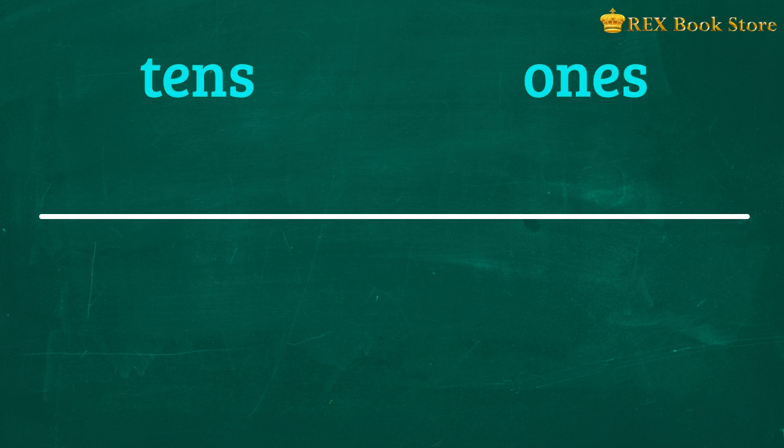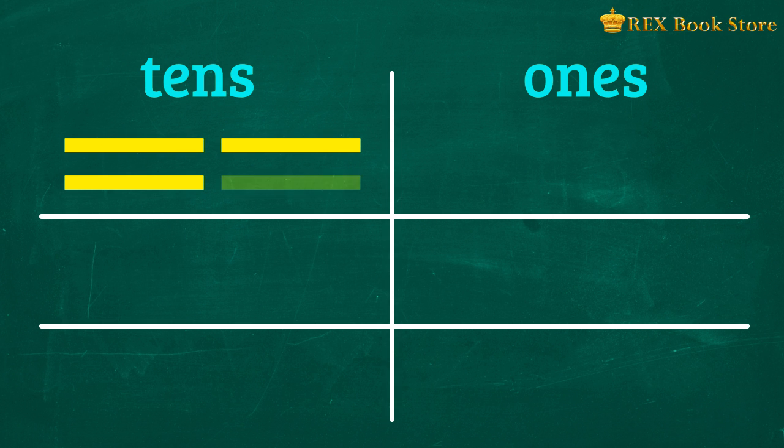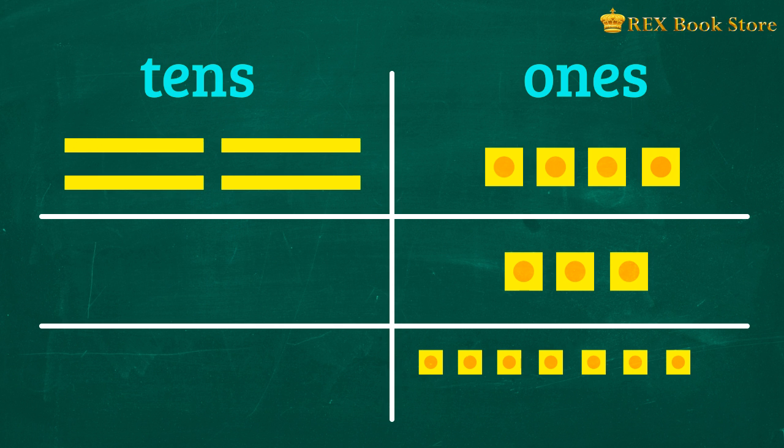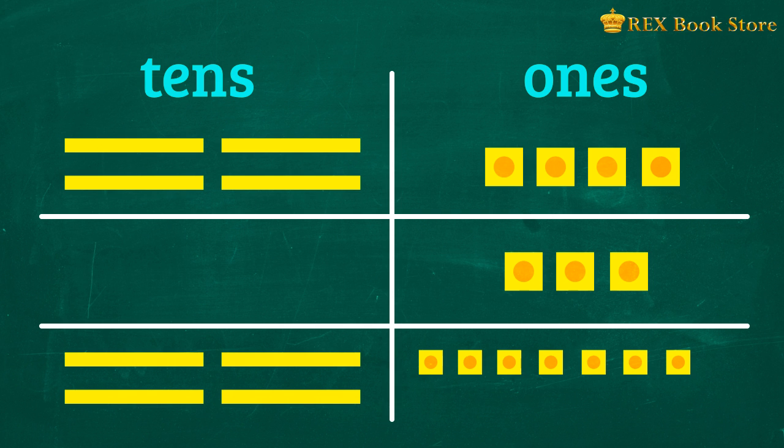We'll draw up a table showing the tens and ones and use rods and units to represent the numbers. So to represent 44, we place 4 rods on the first column and 4 units on the second. To represent 3, we will place 3 units under the second column. Since addition means putting together, we will combine all the rods and units at the bottom. So how many ones do we have? 4 plus 3 equals 7. And how many tens do we have? We have 4. So 44 plus 3 equals 47.